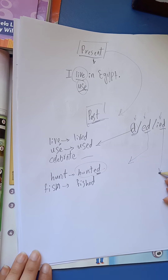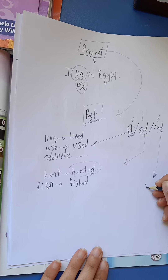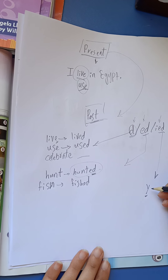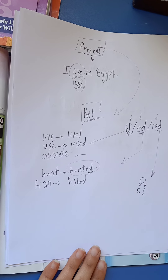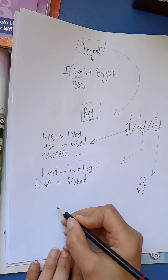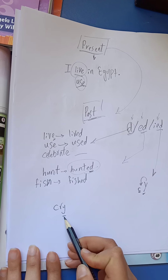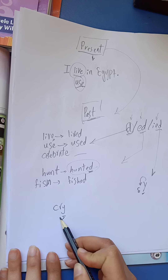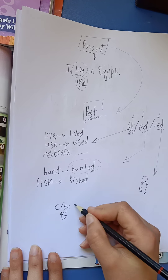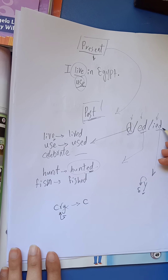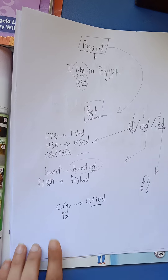What about IED? We add IED when the verb ends with the letter Y, preceded by a consonant letter. Like the verb 'cry' — cry ends with letter Y, and before Y we have a consonant. So we remove letter Y and add IED. It will be 'cried.'